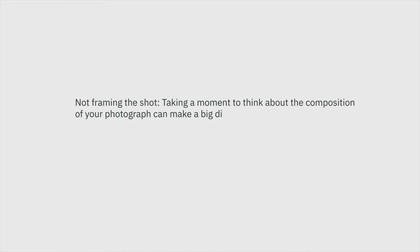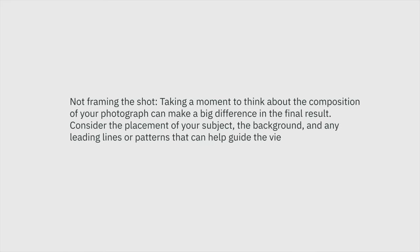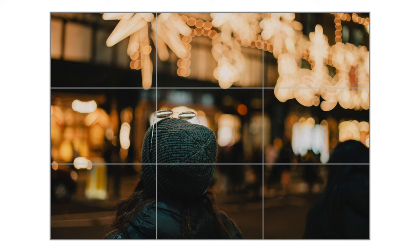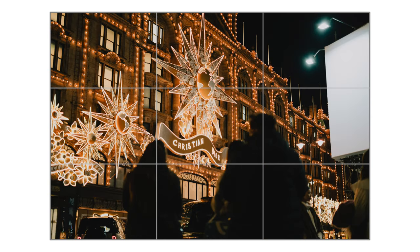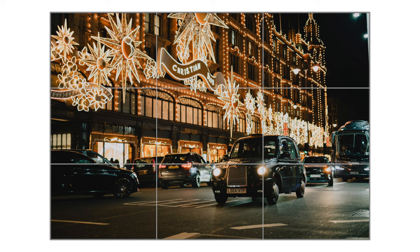Mistake number four: not framing the shot. Taking a moment to think about composition can make a big difference — consider the placement of your subject, the background, and any leading lines or patterns that guide the viewer's eye. I'm combining this with mistake number five: not using the rule of thirds. Composition takes years to develop. Even as a professional photographer, it's something I continually improve on. The rule of thirds — placing your subject on one of the intersecting lines — is a cornerstone staple within photography.